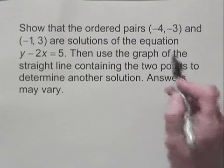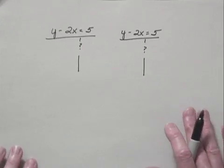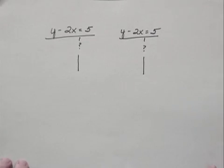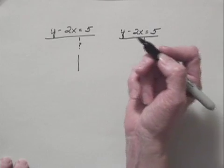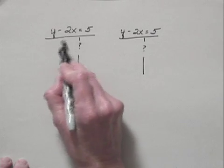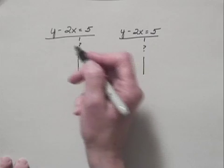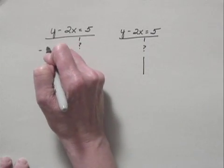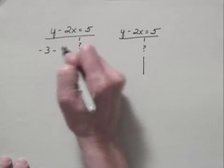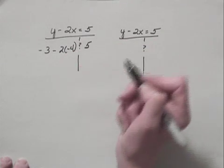Let's first show that the point (-4, -3) is a solution of the equation. We'll do this by substituting negative 4 for x and negative 3 for y. Now this equation is written with y before x, but we always substitute in alphabetical order. So we'll substitute -3 for y and -4 for x, and we're asking, is this equal to 5?